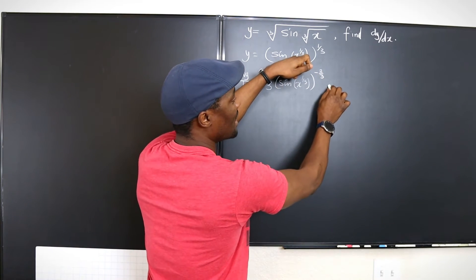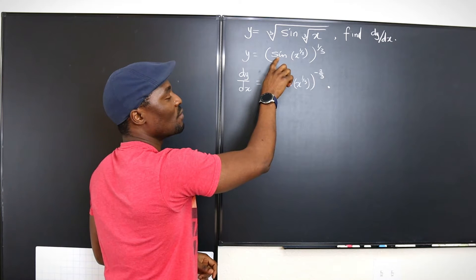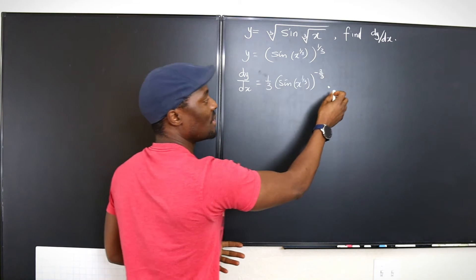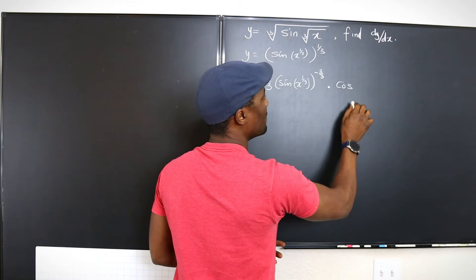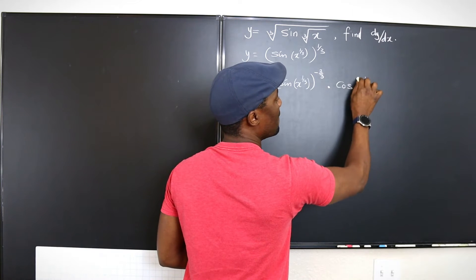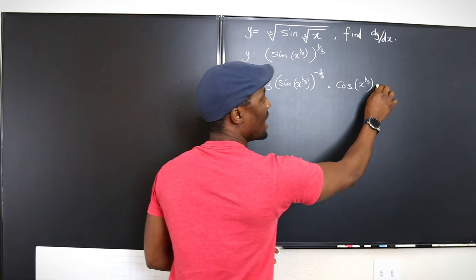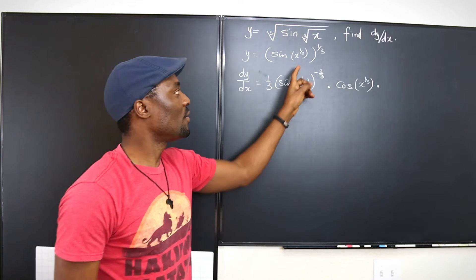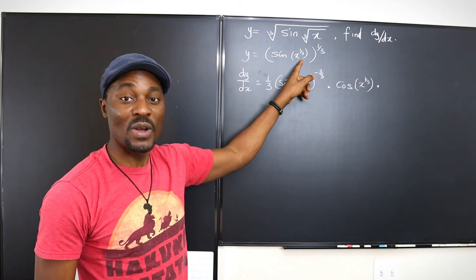Then we're going to multiply by, if you differentiate the sine of a function, you get the cosine of that function. So that's going to be cosine of x to the one over three. It's still there. And then there's one more step. We're going to differentiate what's inside.